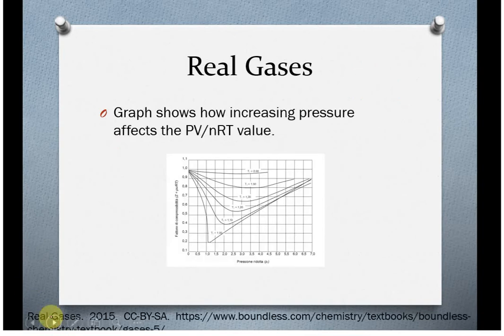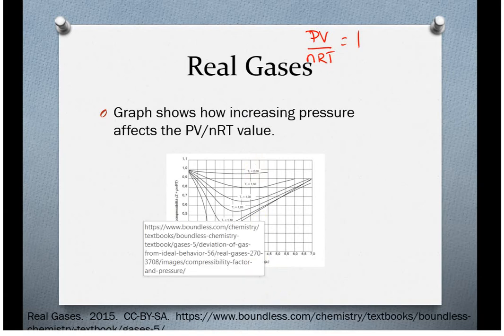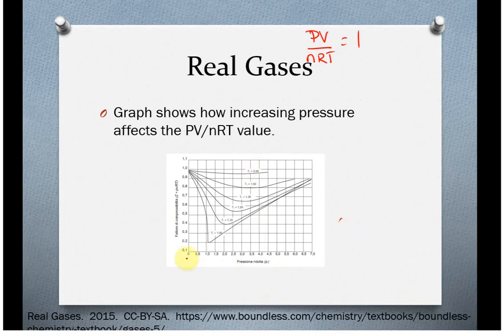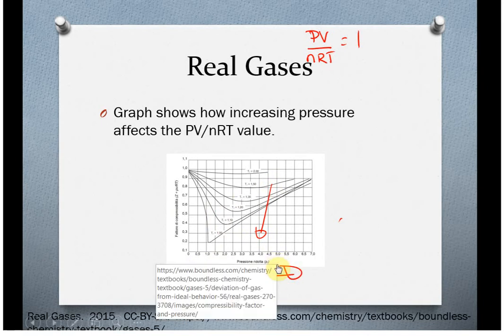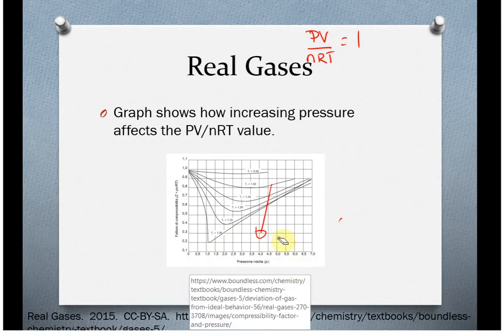Now, if you think back to the ideal gas law, PV over NRT is equal to 1. Here, if these were completely ideal, if real gases behave the right way, and I know it's really hard to see this, but higher pressure or lower temperature, so here's your lower temperatures, here's your higher pressures, give you a deviation from that value of 1. We'll leave it there.